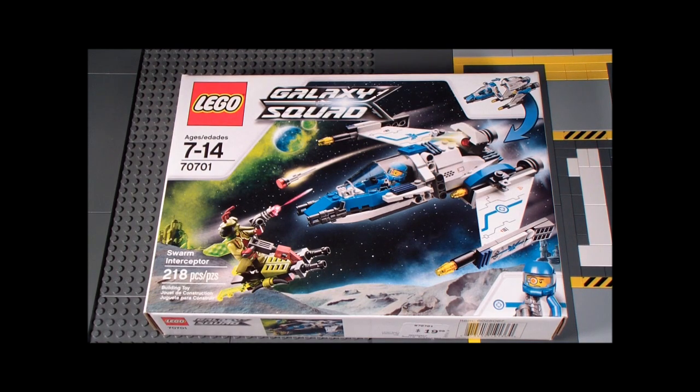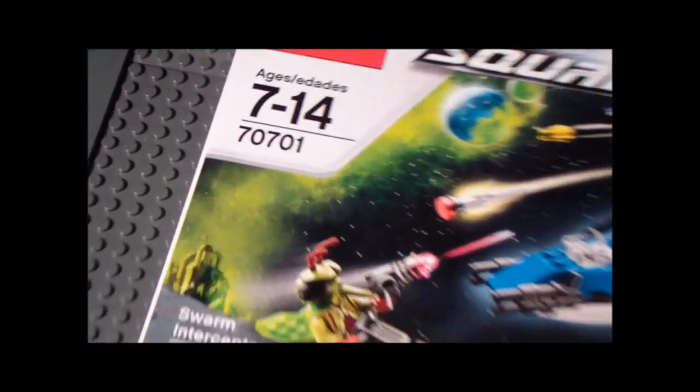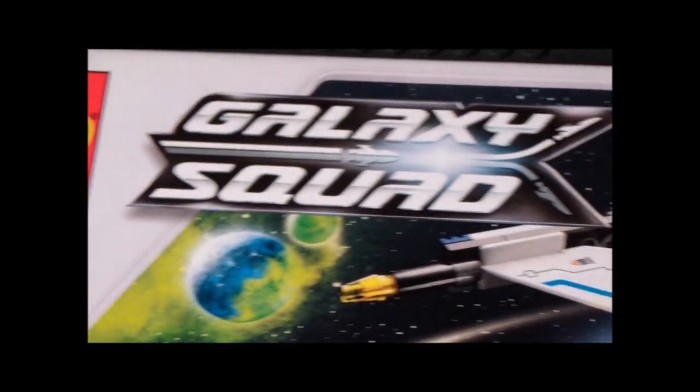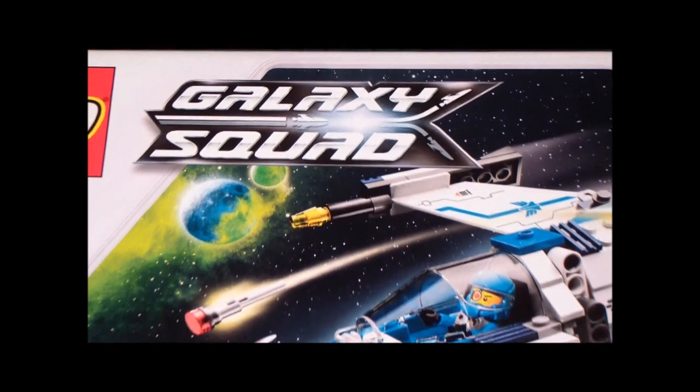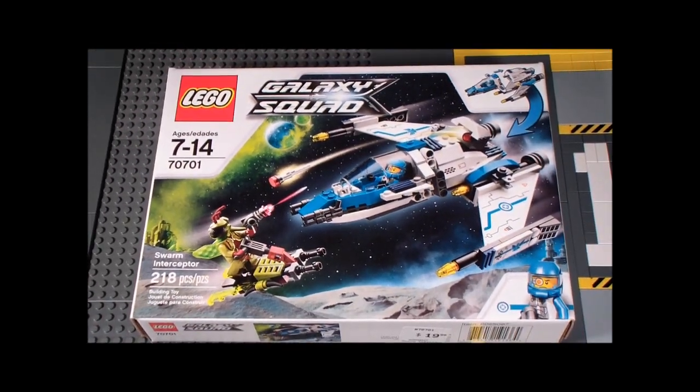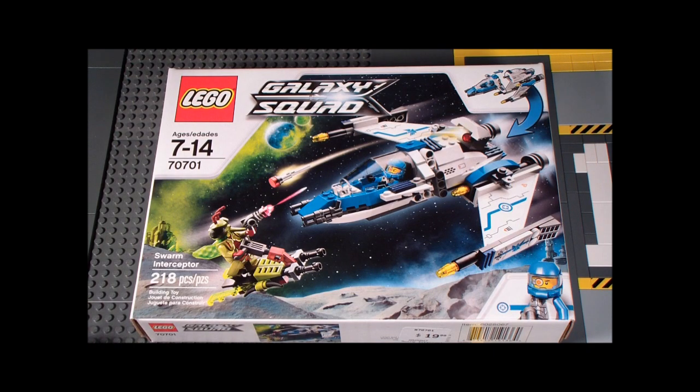Hello everyone and welcome to the Brick Formula review of Lego set 70701, the Swarm Interceptor. It has 218 pieces for ages 7 to 14 and it's from the Galaxy Squad series. This set retails for $19.99 and here in the front you can see the two of them going on for a head-on collision.